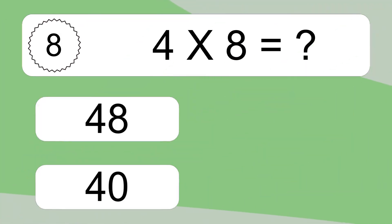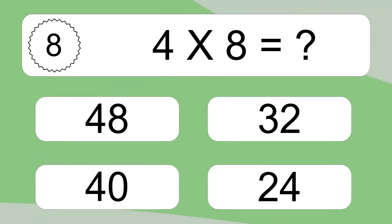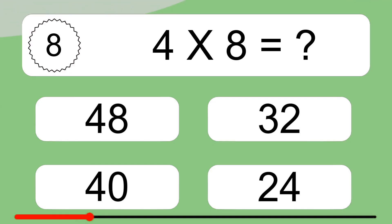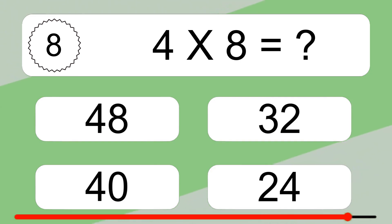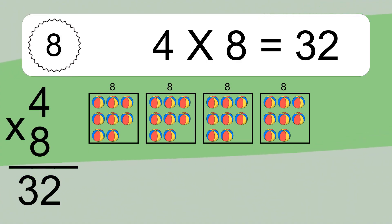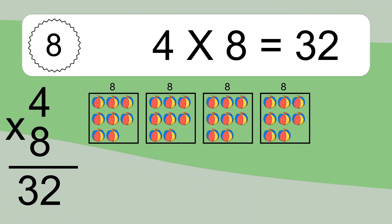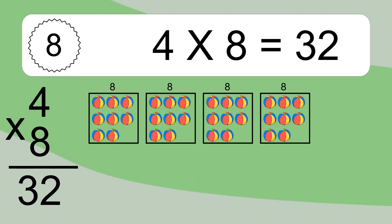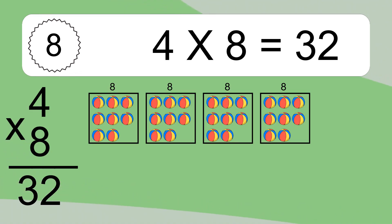4 times 8 equals what? 4 times 8 equals 32. We have 4 boxes, and each box has 8 colorful balls inside. If you count all the balls in all the boxes together, you will have 4 times 8 balls. This equals 32 balls.